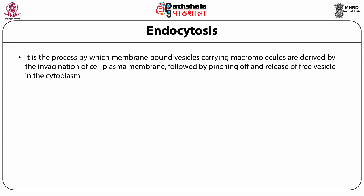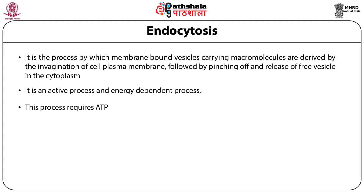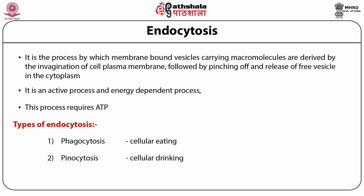Endocytosis is a process by which membrane-bound vesicles carrying macromolecules are derived by the invagination of the cell plasma membrane, followed by pinching off and release of free vesicles in the cytoplasm. This process requires a lot of energy — it is an energy-dependent, active process requiring ATP. As discussed in previous modules, processes requiring ATP are called active processes. Different types of endocytosis include phagocytosis, pinocytosis, and receptor-mediated endocytosis, which will be discussed in detail in later slides.